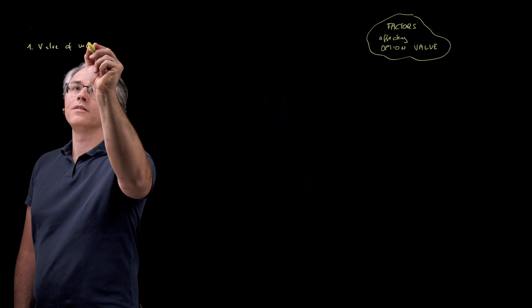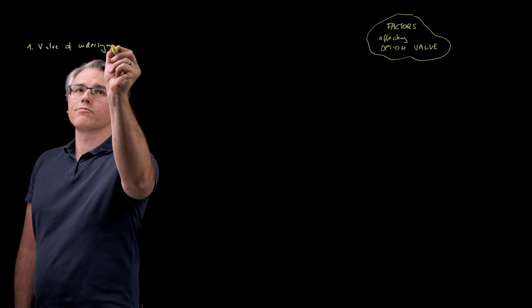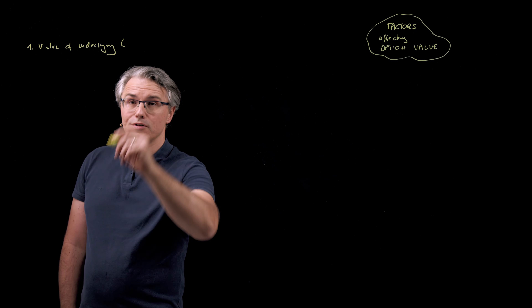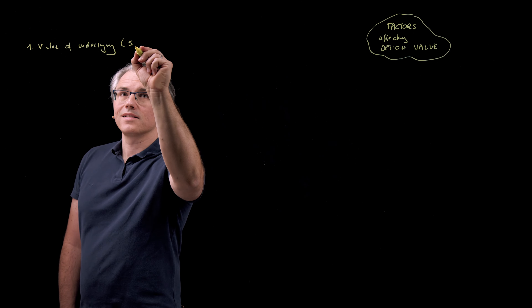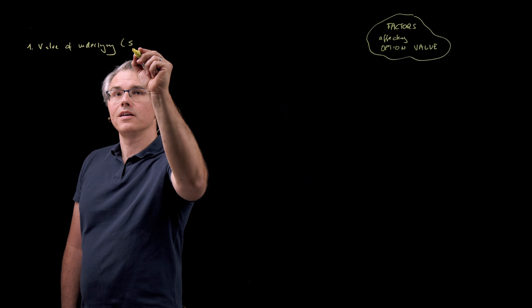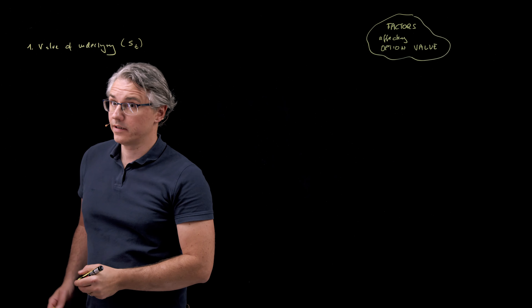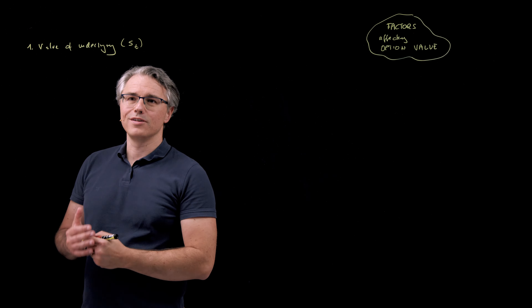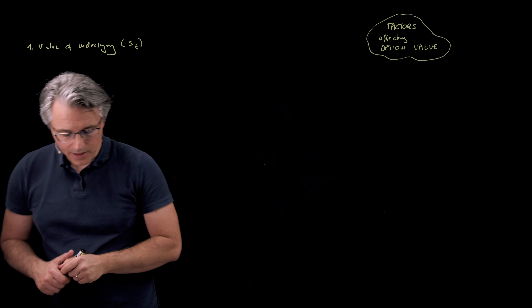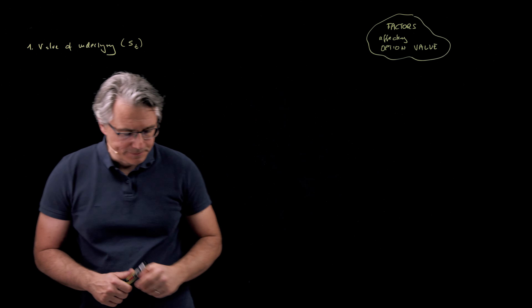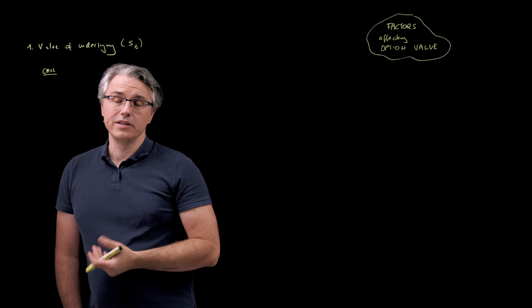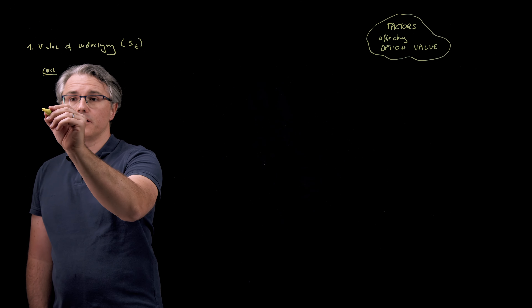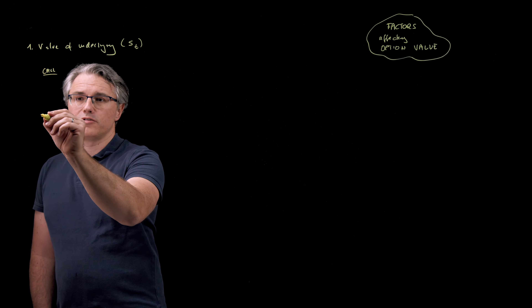The first one, which I don't think should be a big deal, is the value of the underlying asset — the current value of the underlying. In all previous videos I was saying that before the option hits its maturity date, we will be denoting this as S with lower index T, the spot price of the underlying asset, as opposed to capital T, which is the value of the underlying at the maturity date.